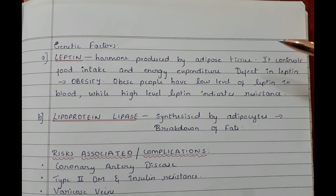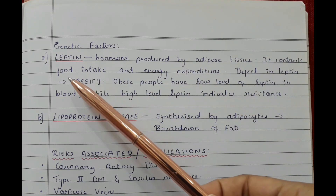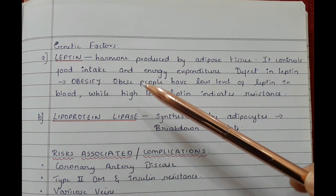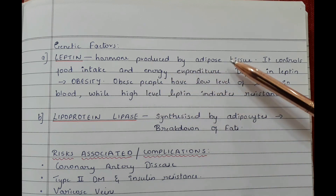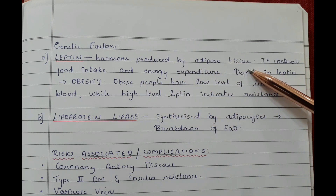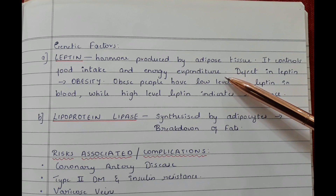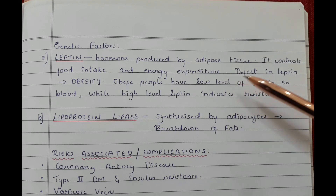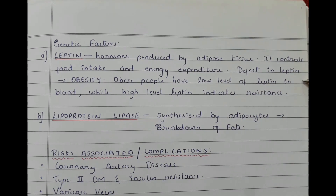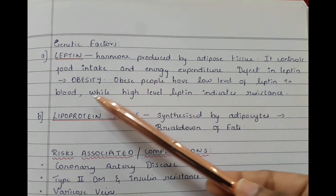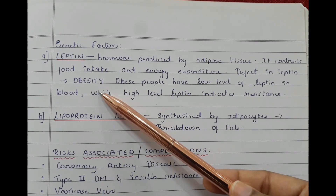Genetic factors include leptin. Leptin is a hormone produced by the adipose tissue. It controls food intake and energy expenditure. A defect in leptin can result in obesity.